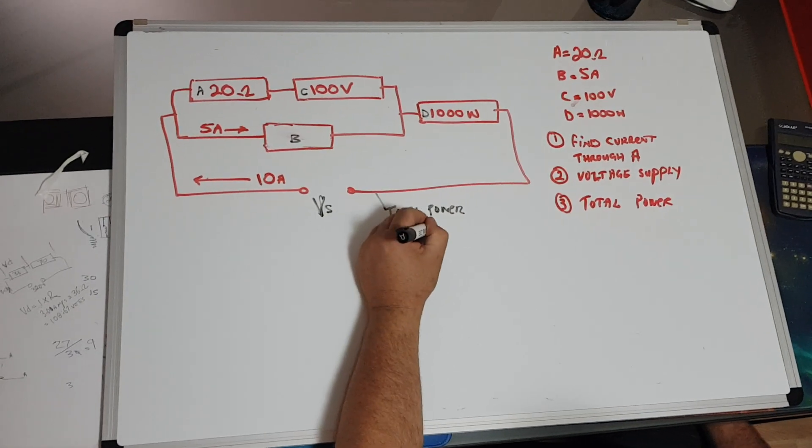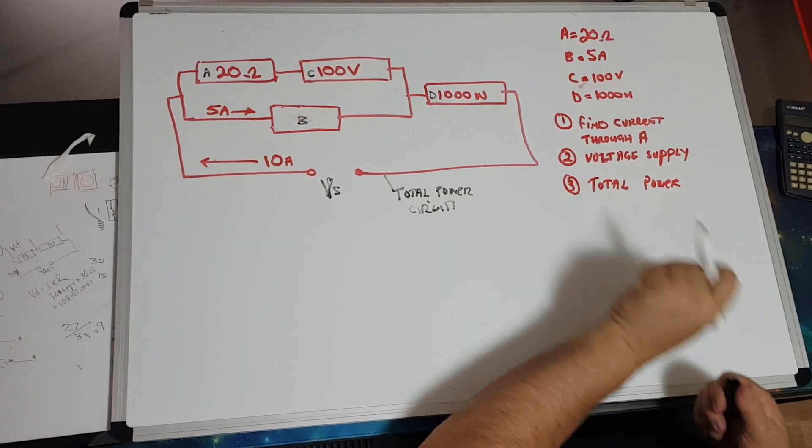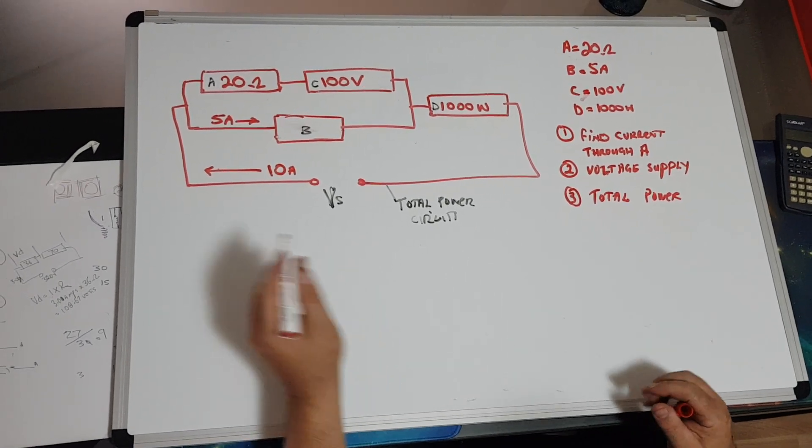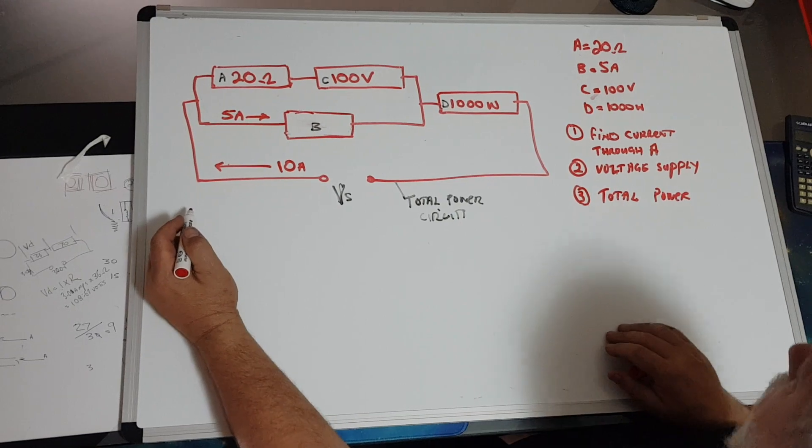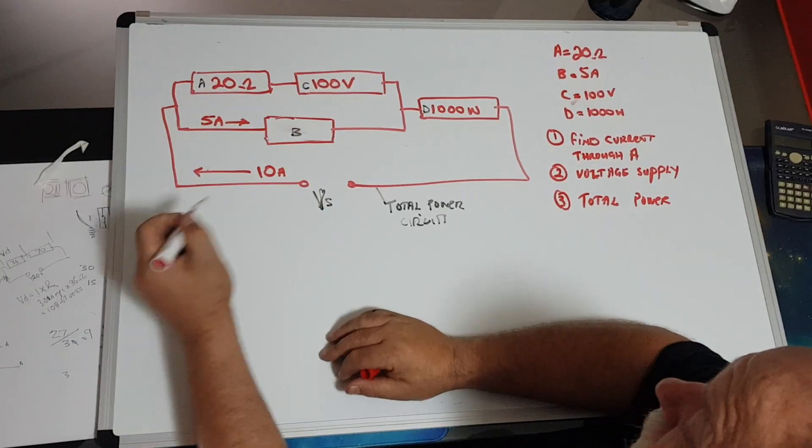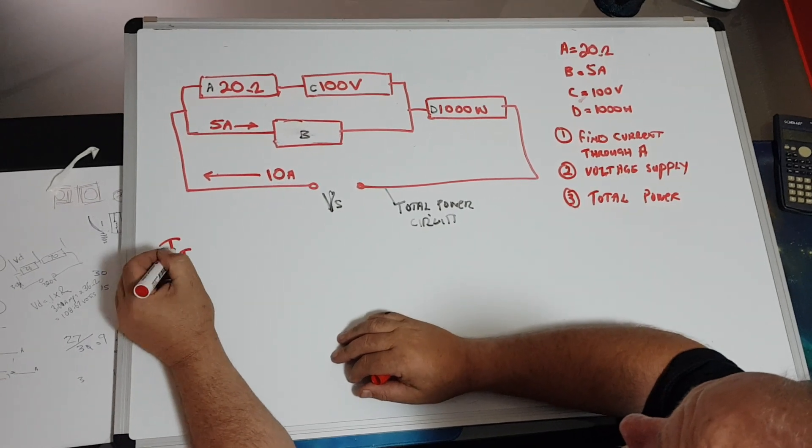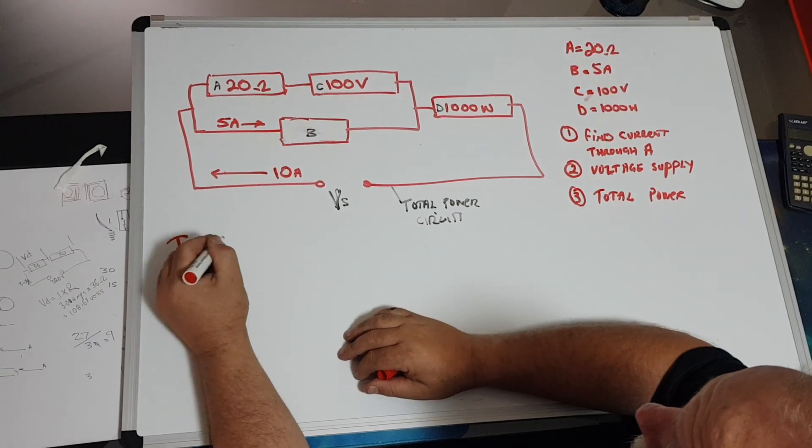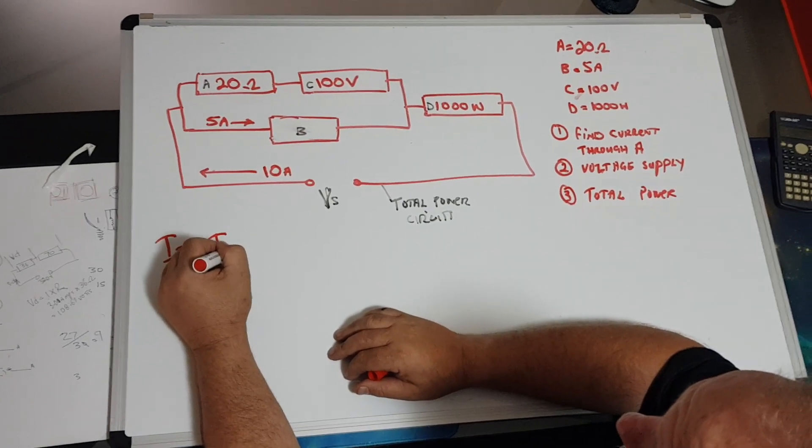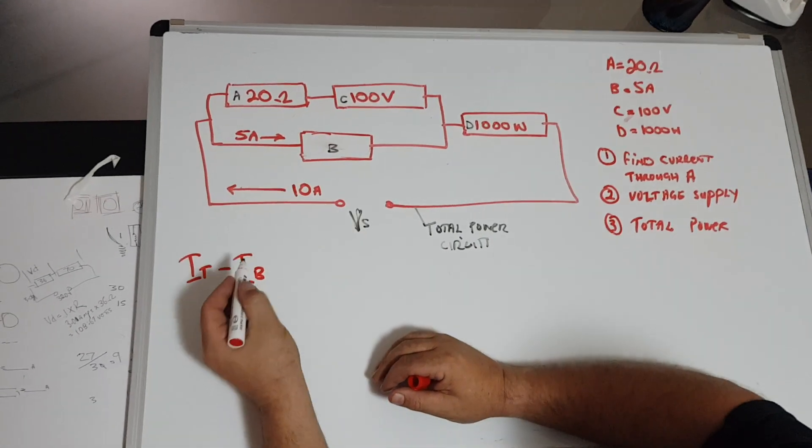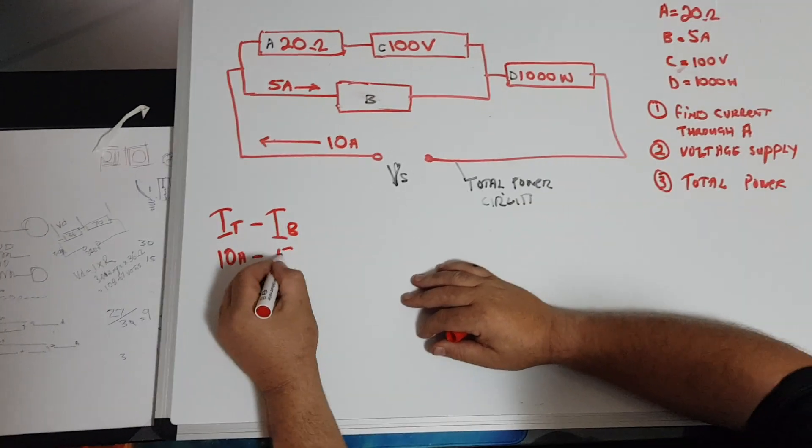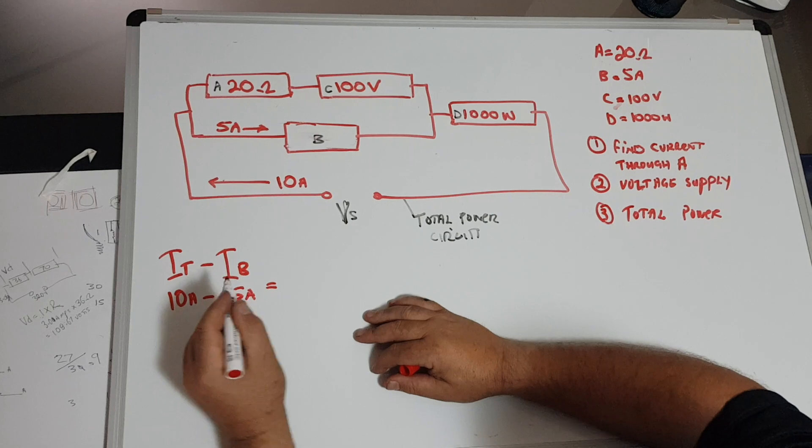All right, let's get started. The first thing I need to do is find the current flowing through these two first. So if I go current total minus current for B, which is this one here, 5 amps, so I'm going to go 10 amps minus 5 amps.